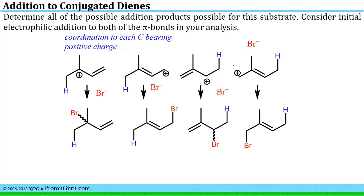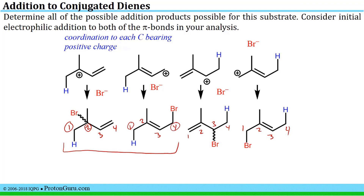That will lead to the possible addition products seen here. The two structures on the left result from initial electrophilic addition to pi bond 1, giving a 1,2 addition product and a 1,4 addition product. The two structures on the right are the 1,4 and 1,2 addition products resulting from initial electrophilic addition to pi bond 2. These are all the possible addition products for these structures.